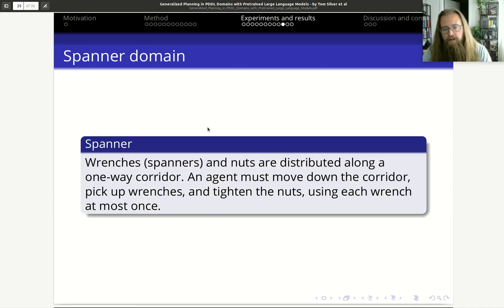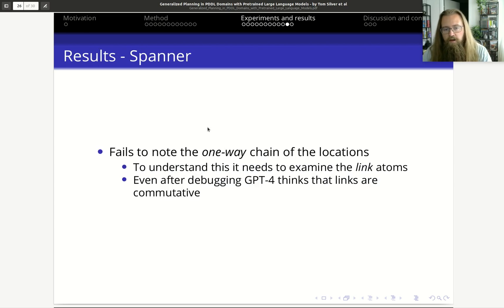In the Spanner domain, we have these wrenches, spanners, and we have some nuts, and we want to tighten these nuts using the wrenches. Only one wrench can be used at most once. Here it fails to realize that you can only walk one way - you cannot walk back, for example.